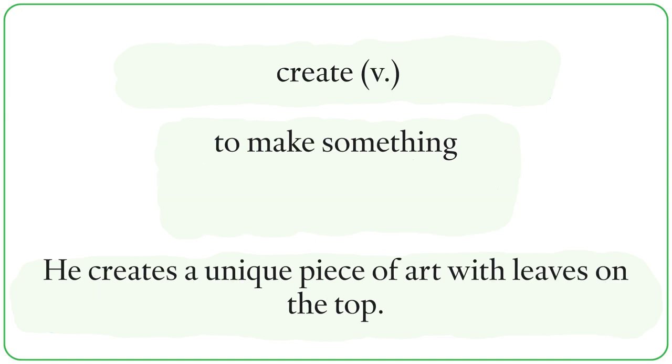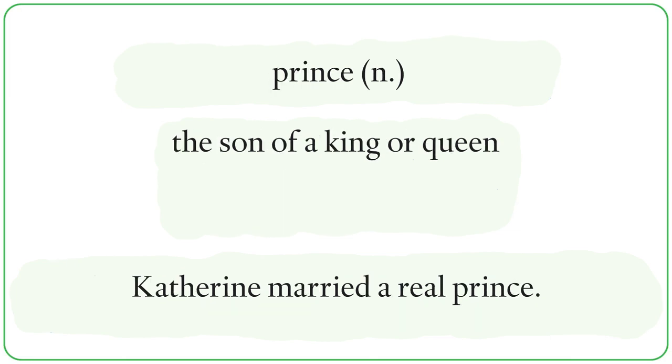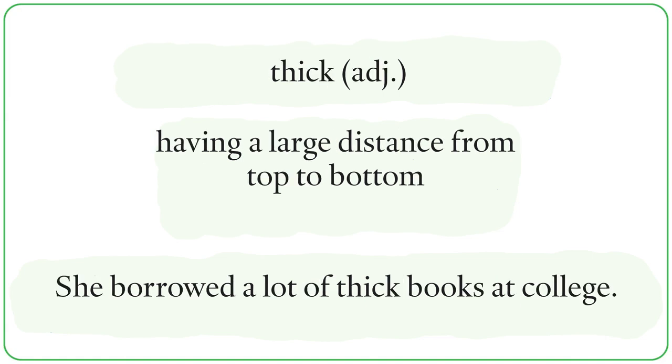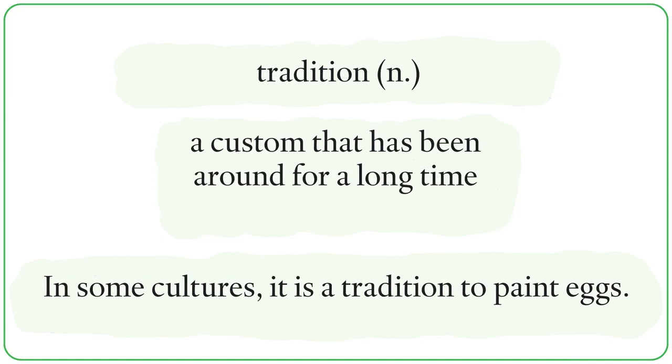Create. He creates a unique piece of art with leaves on the top. Memory. They have great memories of their trip to the island. Prince. Catherine married a real prince. String. The clerk put a string around the gift. Thick. She borrowed a lot of thick books at college. Tight. Max is not comfortable wearing this tight shirt. Tradition. In some cultures, it is a tradition to paint eggs.